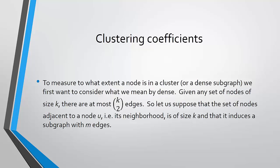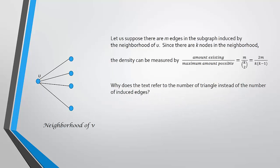Suppose that a given node u is of degree k. We're looking at its neighborhood of size k, and further suppose that its neighborhood induces a subgraph with m edges. To determine the clustering coefficient of a node we look at the ratio of the number of edges induced by that node's neighborhood over the total possible number of edges. We can represent that as m over k-choose-2, which reduces to 2m over k times k minus 1.